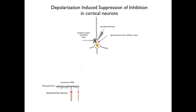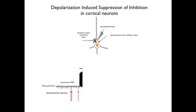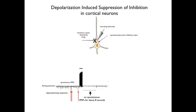Next, what we do is strongly depolarize the cell by passing positive charges through the recording electrode for several seconds. After the injection of positive charges has stopped, the inhibitory fiber is still firing spontaneously, but for a period of about eight seconds there are no IPSPs. The inhibitory synapses are blocked due to the prior strong depolarization of the postsynaptic cell. As the recording continues, the IPSPs begin to return, and after about 20 or 25 seconds, the inhibitory responses are as strong as they were before the postsynaptic cell was depolarized.